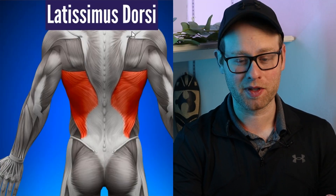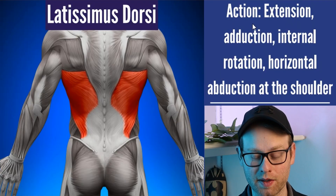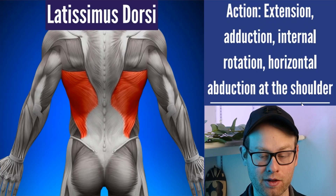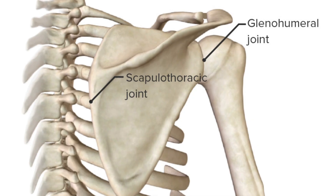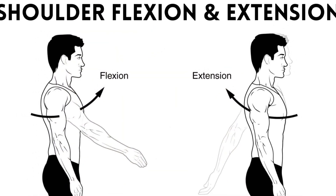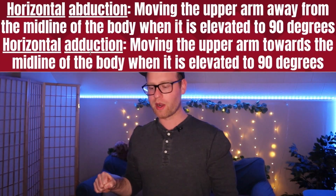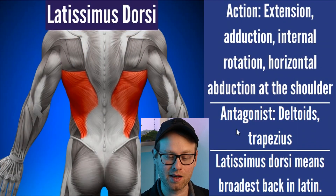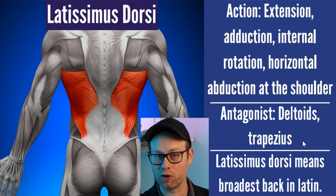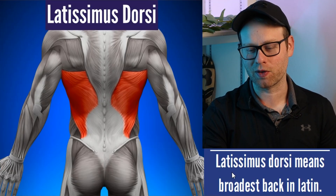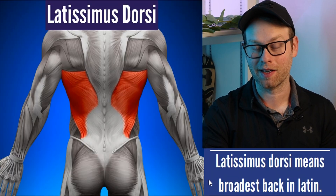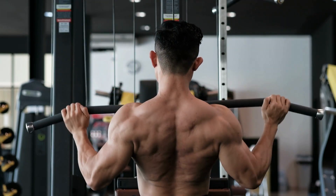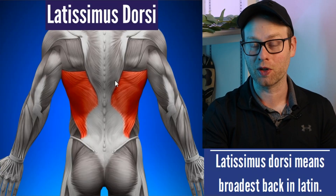Next up we have a big one — the latissimus dorsi, better known as the lats. This muscle mainly acts on the shoulder and does extension, adduction, internal rotation, and horizontal abduction at the glenohumeral joint and scapulothoracic joint. Because the lats do so many different things, they have quite a few antagonists — some of the more prominent ones being the deltoids and the trapezius. Fun fact: latissimus dorsi means broadest back in Latin, and if you want to make your back more broad or wide, building up your lats is one of the best things you can do.